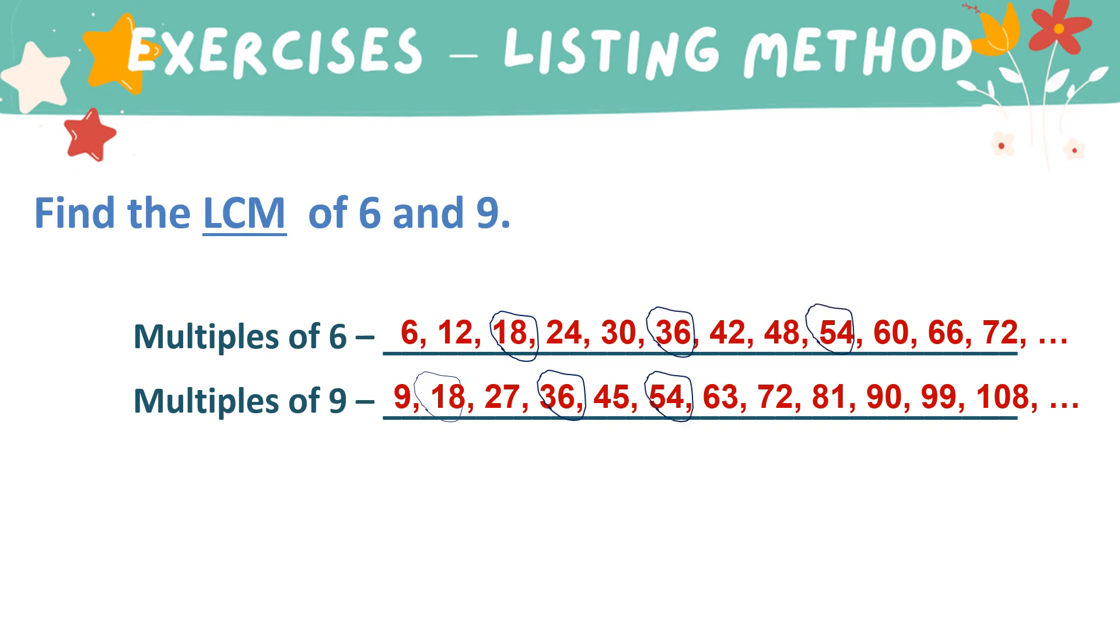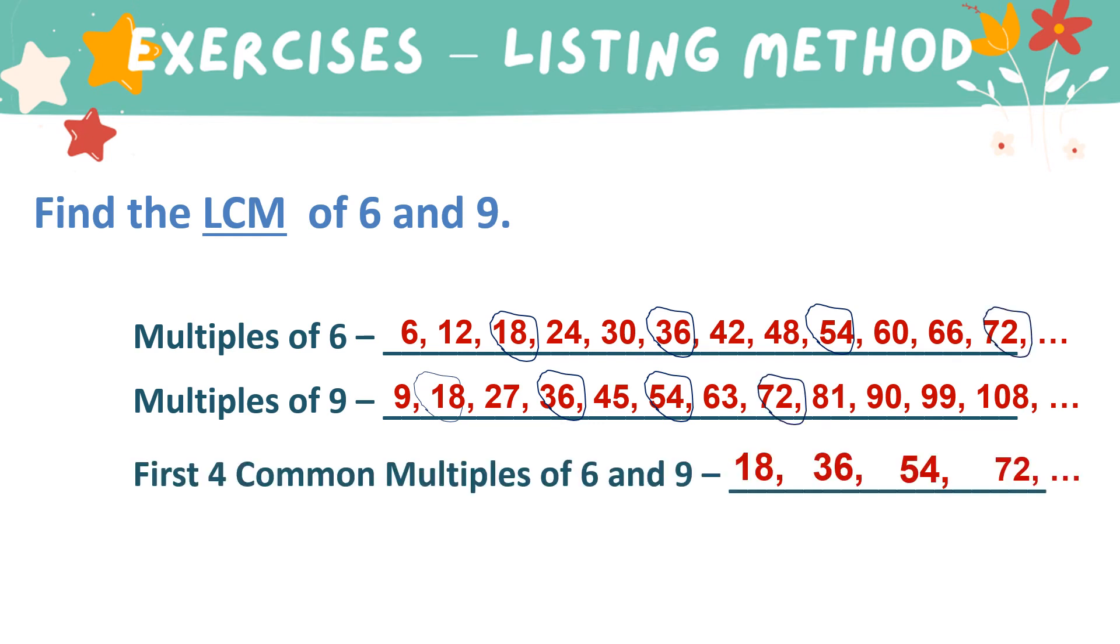Then we have 54, and then 72. So these are the first four common multiples of 6 and 9. But there are still more. Among them, the least common multiple is 18.